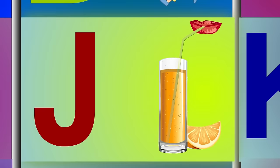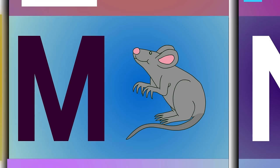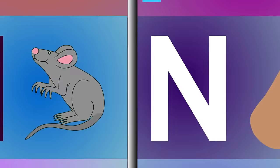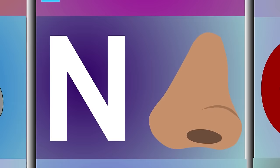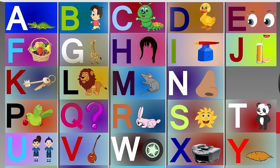I for ink, e-e-ink. J for juice, j-j-juice. K for key, k-k-k-key. L for lion, l-l-lion. M for mouse, m-m-mouse. N for nose, n-n-nose. O for octopus, o-o-o-octopus. P for parrot, p-p-parrot.